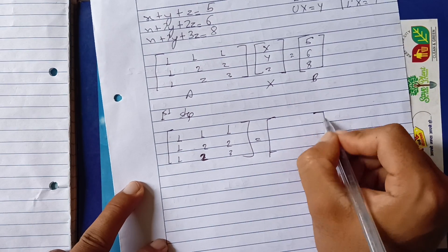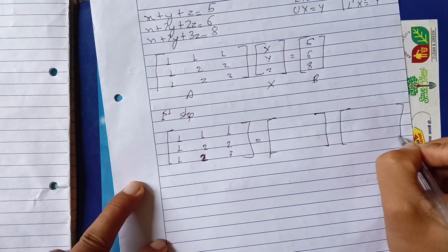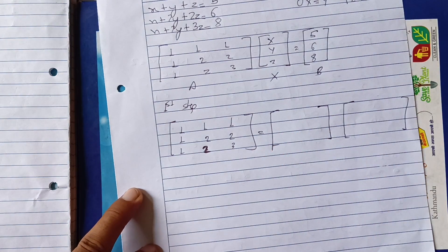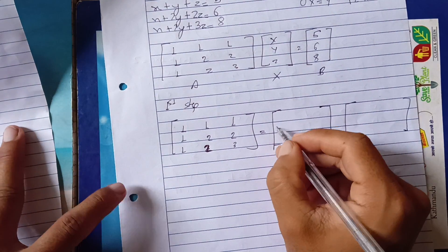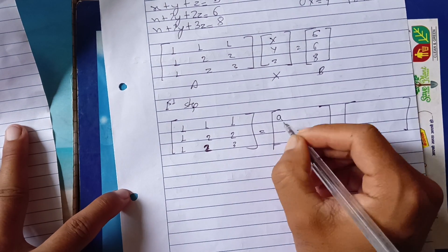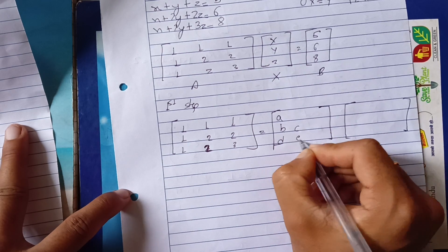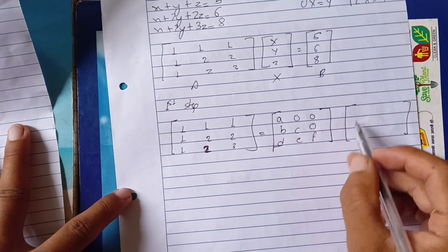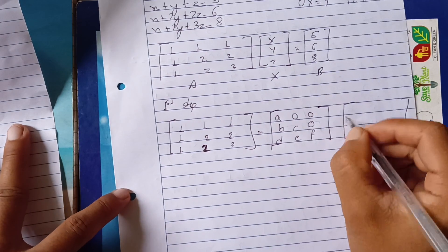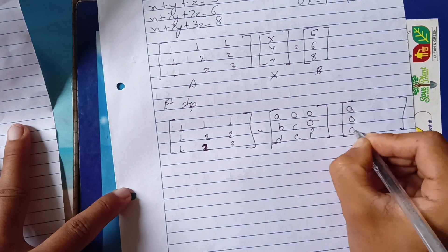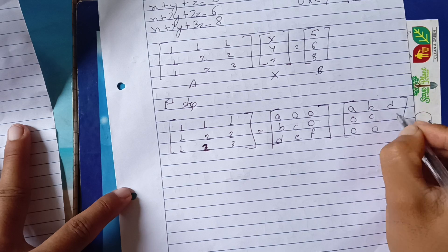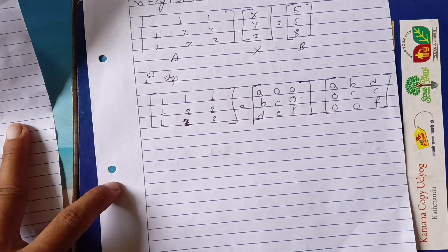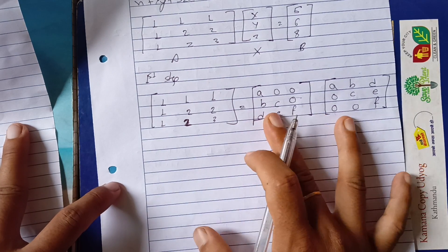A equals L into L transpose. L is going to be A, B, C, D, E, F — with zeros in the upper triangle. The transpose takes rows like columns: A, B, C then zero, D, E, F. That gives us L and L transpose.